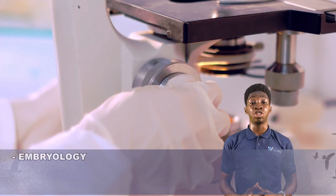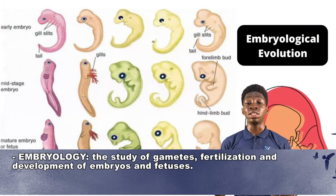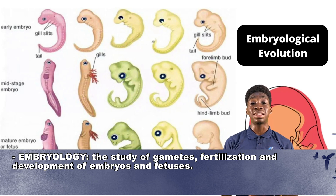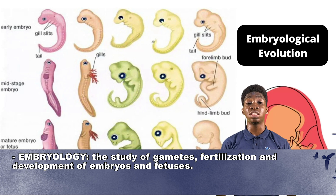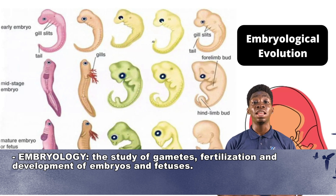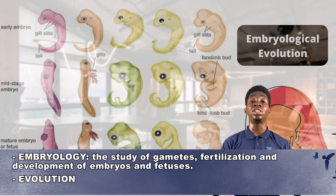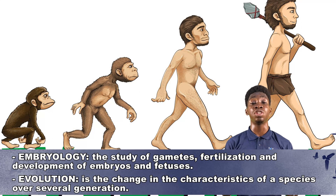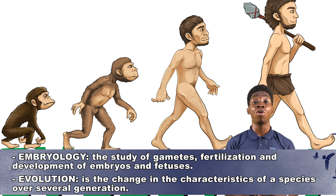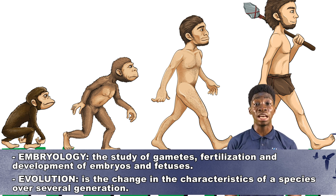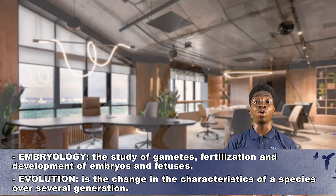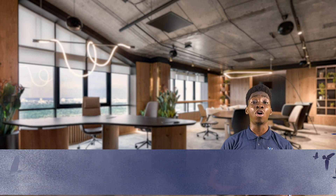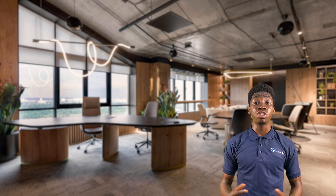We also have embryology, which is the study of gametes, fertilization, and the development of embryos — the way organisms grow, the way they are fertilized, the way they come into being. Then we have evolution, which is the changing of characteristics of a species over several generations, studying how organisms have evolved over time. We also have several other divisions such as bacteriology and virology, among hundreds of others.